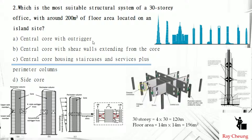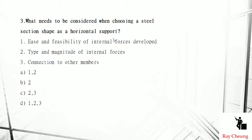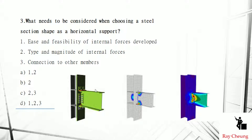A typical Hong Kong building at 30 stories only needs a central core with staircases and perimeter columns — that is good enough. The outrigger system should be used for super-tall buildings around 400 meters. For this question about choosing the steel section for a horizontal member, selection normally depends on the loading. Sometimes you also need to consider the connection. If the magnitude is very high, you use a higher steel grade or increase thickness.